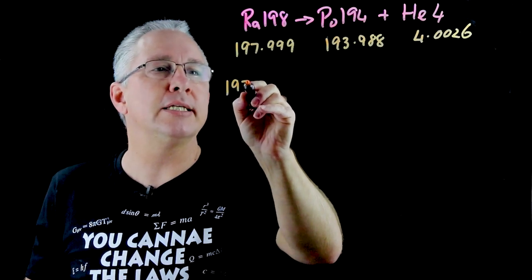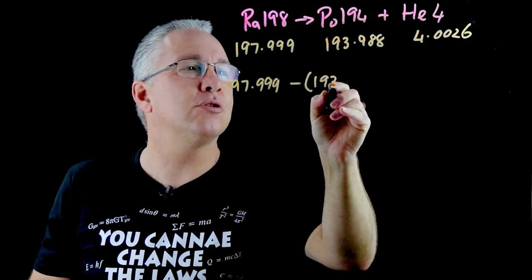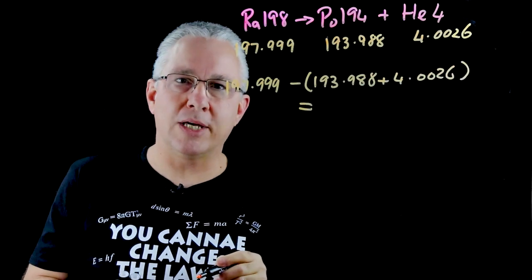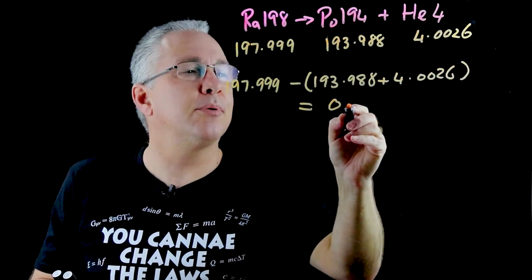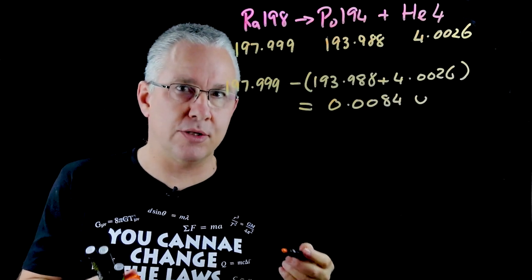And all we need to do is take this our 197.999 and subtract the sum of the two that we have before. Now when you calculate that out you get 0.0084u. Now that of course is in atomic mass units.